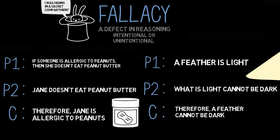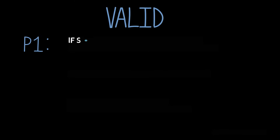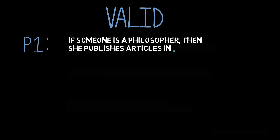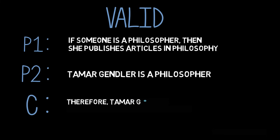Either way, it's probably a good idea that we're able to understand and identify distinct fallacy types so that we can adequately correct any defects in our reasoning. But before we talk about fallacy types, let's recall what a valid argument is. Consider this argument. Premise one: if someone is a philosopher, then she publishes articles in philosophy. Premise two: Timar Gemmler is a philosopher. Therefore, Timar Gemmler publishes articles in philosophy.